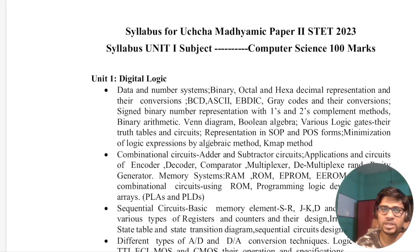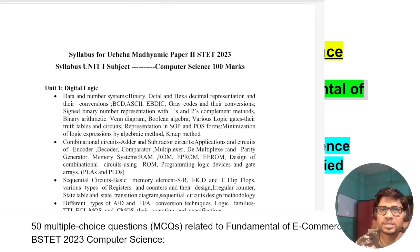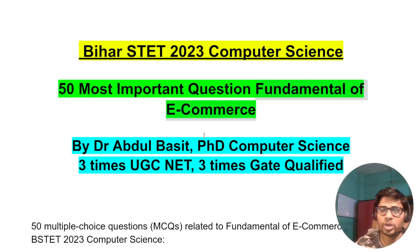Subjects covered include Artificial Intelligence, IoT, Computer Network, DBMS, and Software Engineering — 50 questions each. For DBMS and Computer Network combined, you have 200 questions. I thought that every subject should have 50 most important questions so that it will be helpful for you.